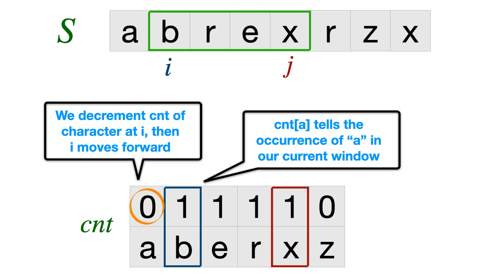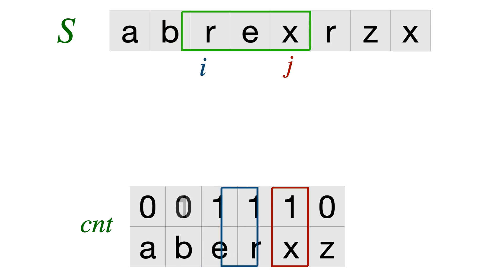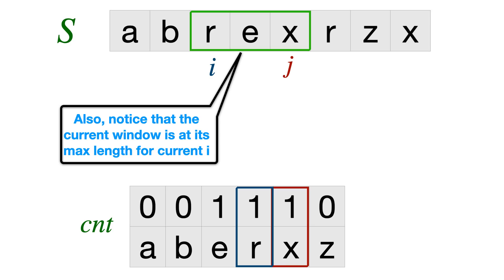Now we have a new i value and we try to extend this further, but we again see that the count of R is becoming 2. So now we again cannot go further. So j stays at the same place and this is the longest substring for given i. Again, we make i go forward towards the right hand side and we can see that R, E and X are the characters present. And notice that the current window is at its maximum length for current i. This is something which you are always ensuring. Like we always give priority to j in moving forward. Only when it is not possible, we make sure that we are progressing i towards the right hand side.